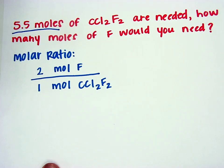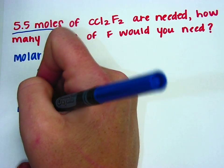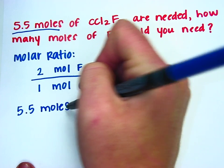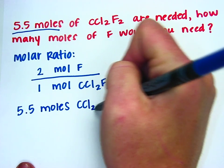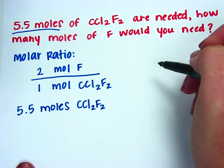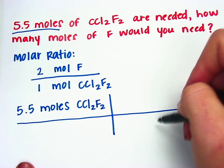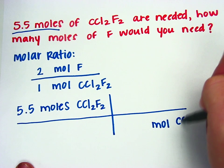So I'm going to start with my given information just like I did before: 5.5 moles of CCl2F2. And I'm going to try and get rid of moles of CCl2F2, so I'll put it on bottom so that my units will cancel out.